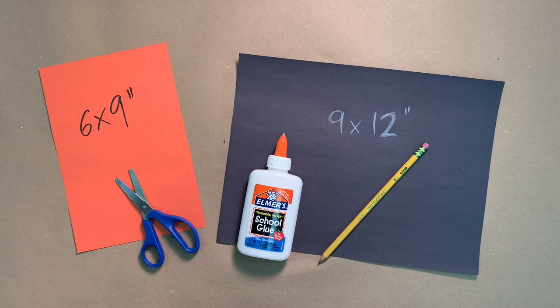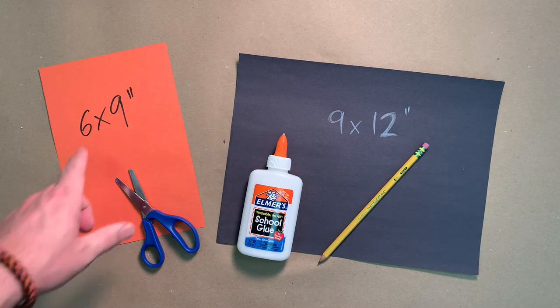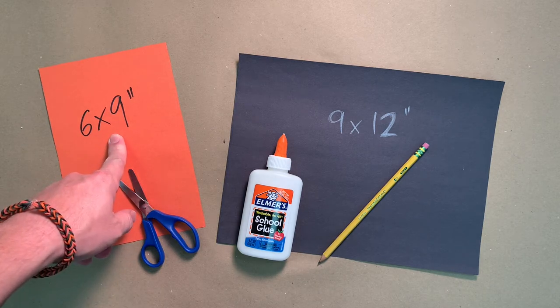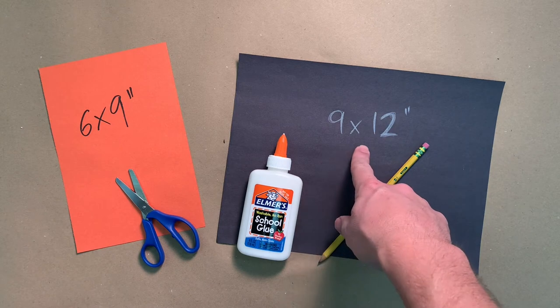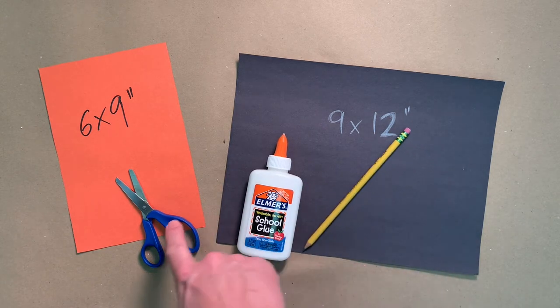Here are the supplies you will need to make your jack-o'-lantern today. A 6 by 9 inch piece of orange paper, a 9 by 12 inch piece of black paper, pencil, glue, scissors.